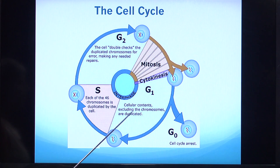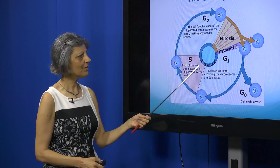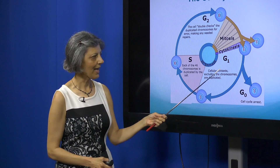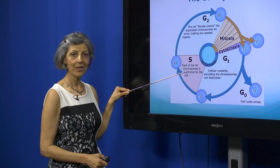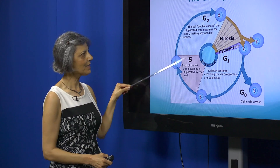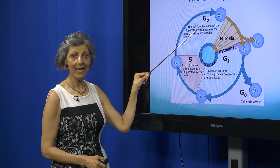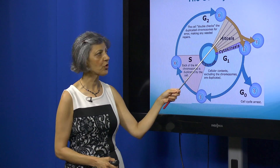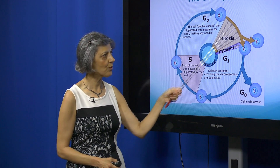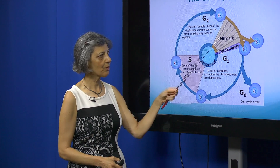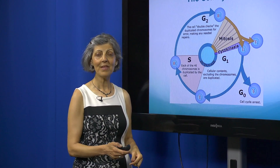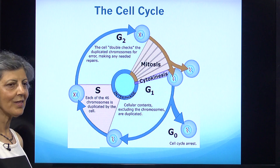What are those phases? There is G1, the first gap; S, the synthesis; G2, the second gap; and M, which is actually the mitosis where the actual division takes place. We are going to look at each one of these and learn the most important events.